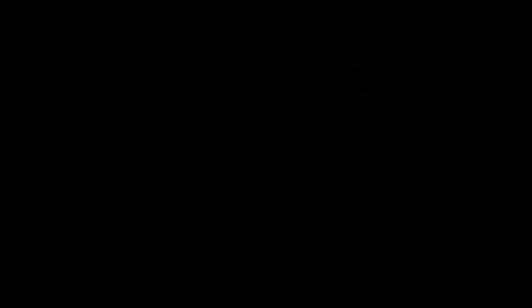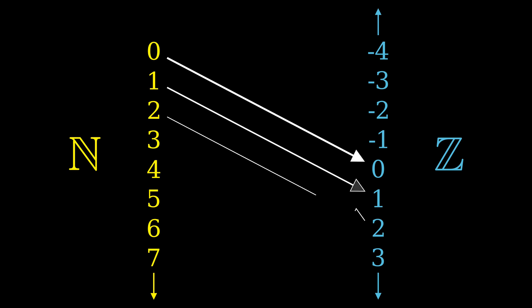For a classic example, think about, on one hand, the natural numbers, which we'll call N. They go off infinitely in one direction. On the other, think about the integers, which also include the negative numbers. We'll call that Z, and it goes off infinitely in both directions. At first glance, it seems like these sets can't possibly be the same size. All the elements of N are contained in Z, but on top of that, there are an infinite amount of extras left over.